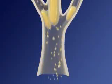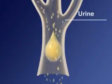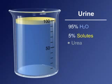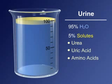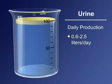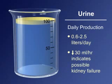The filtrate is now urine. Urine is about 95% water with a balanced urea, uric acid, amino acids, and electrolytes. The daily production is about 0.6 to 2.5 liters per day. Urine production below 30 milliliters per hour indicates possible kidney failure.